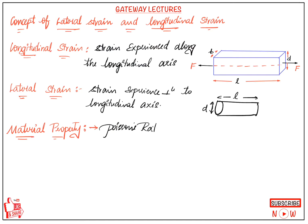To define how a material reacts to this — what ratio it decreases its diameter when it increases in length — we use a material property called Poisson's ratio. Poisson's ratio is important, different for different materials, and is denoted by mu, or in some cases by 1 by M in some derivations.